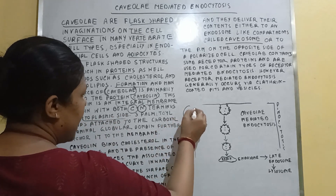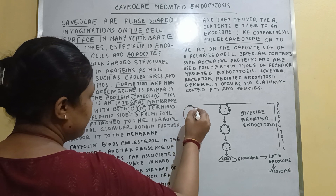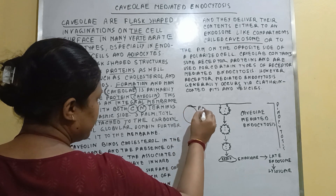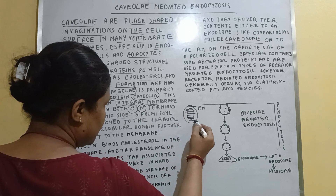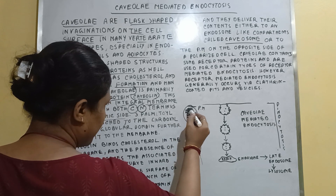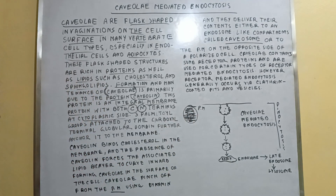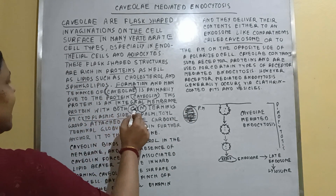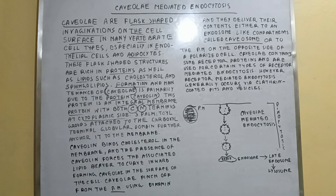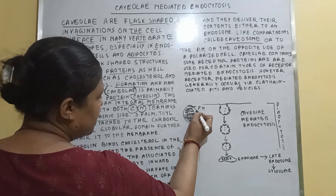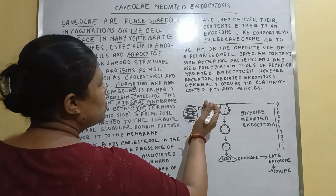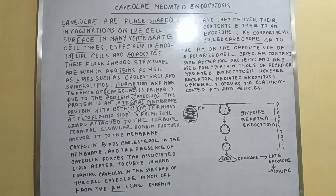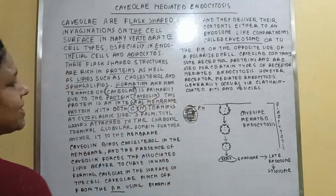Suppose this is the cell and this is the plasma membrane. This is the cytoplasmic area. The C and N terminals remain inwards toward the cytoplasmic side, not toward the outward side of the plasma membrane — just toward the cytoplasmic area.